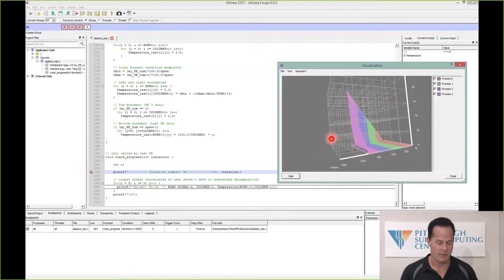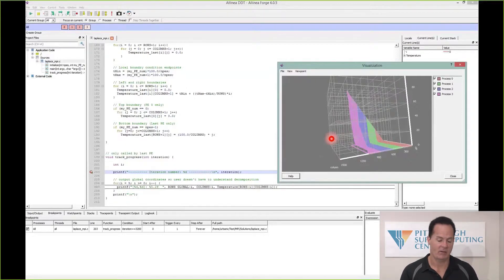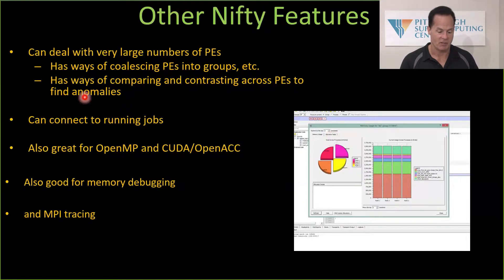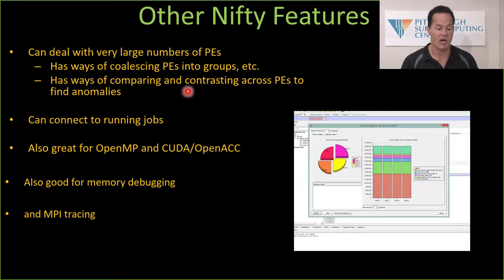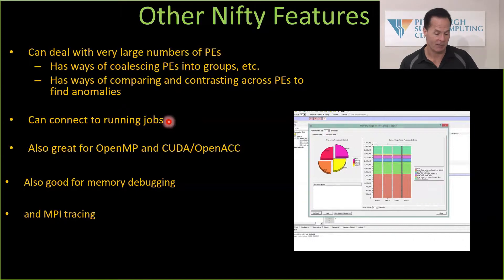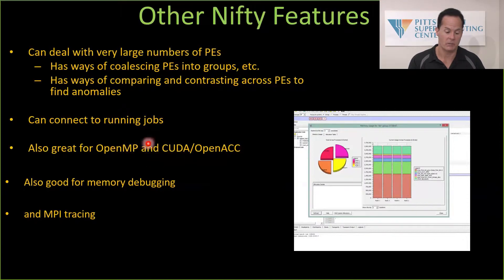These are wonderful things to have, and they're available to you on Bridges — we have DDT — and on other Exceed platforms, DDT or TotalView is typically available. They work with very large numbers of PEs. You might think it's unmanageable to debug 20,000 PEs to find which one's causing a weird problem, but you can do that — you can coalesce them into groups. You can also connect to running jobs, so if the problem happens eight hours into a run on 10,000 PEs, you can actually connect to that job partway through the run. These also work well with hybrid codes — standalone OpenMP or a hybrid MPI/OpenMP mix. They also deal with memory debugging, and they can trace messages bouncing back and forth as well.